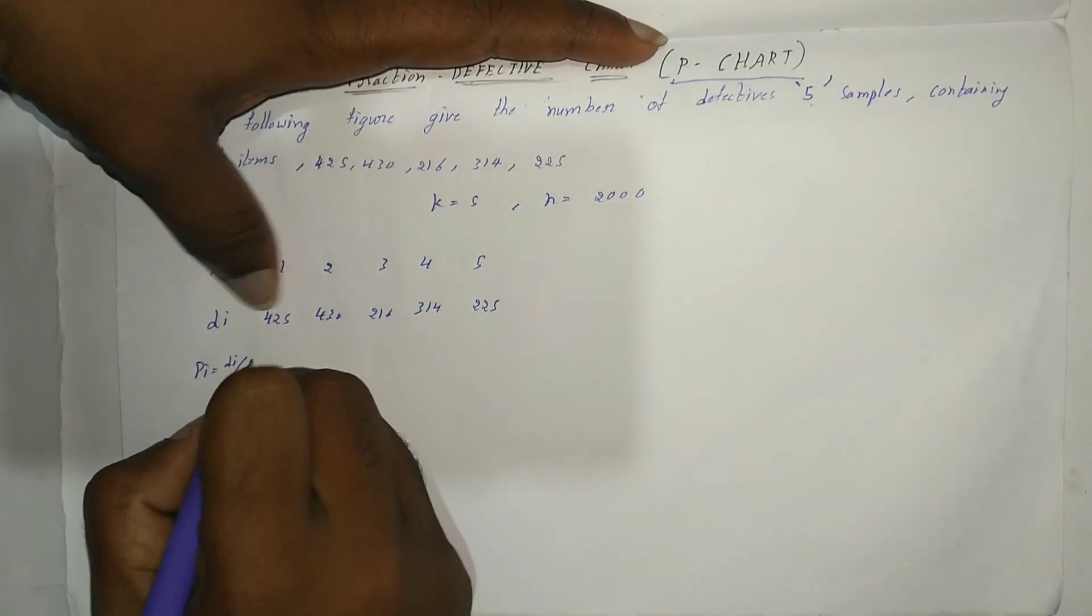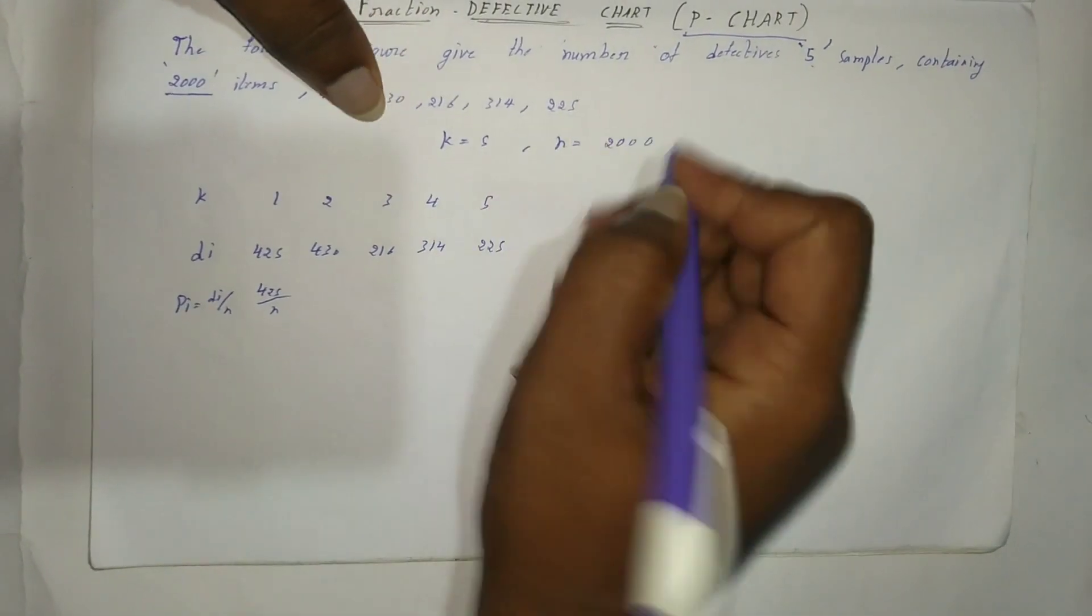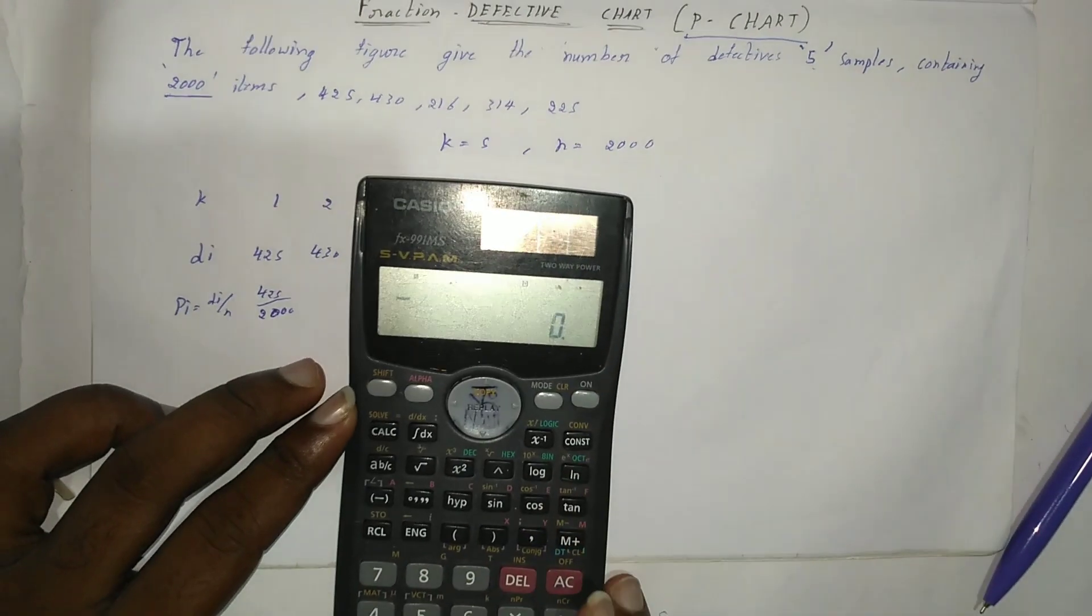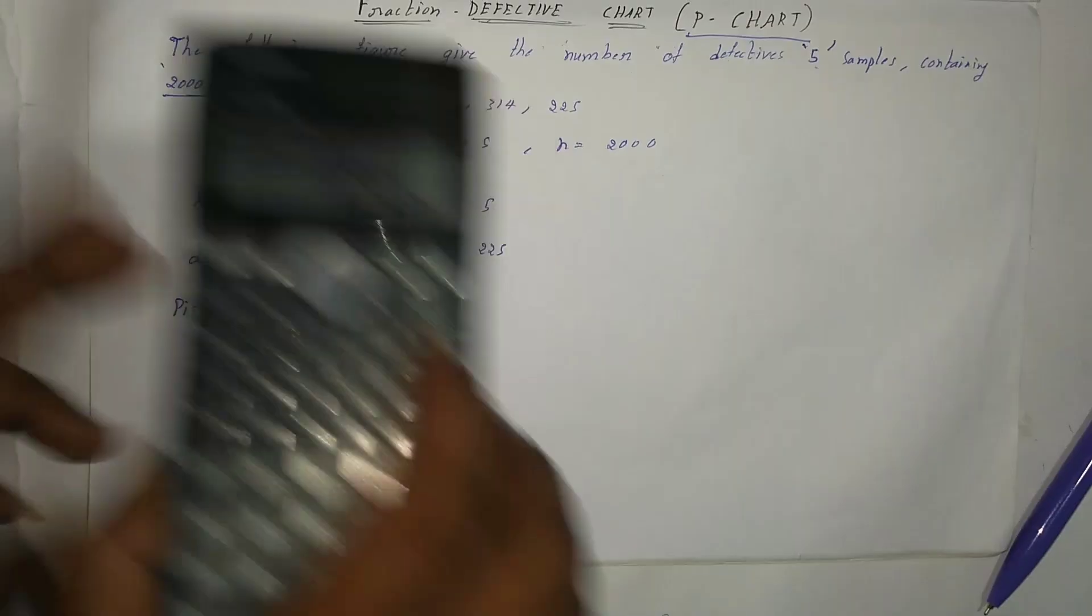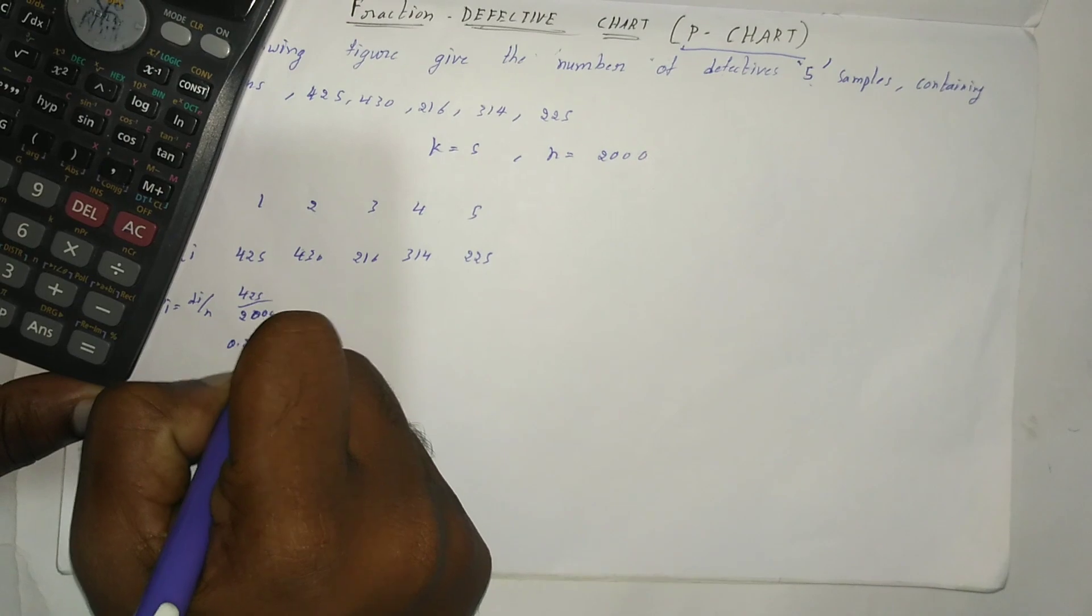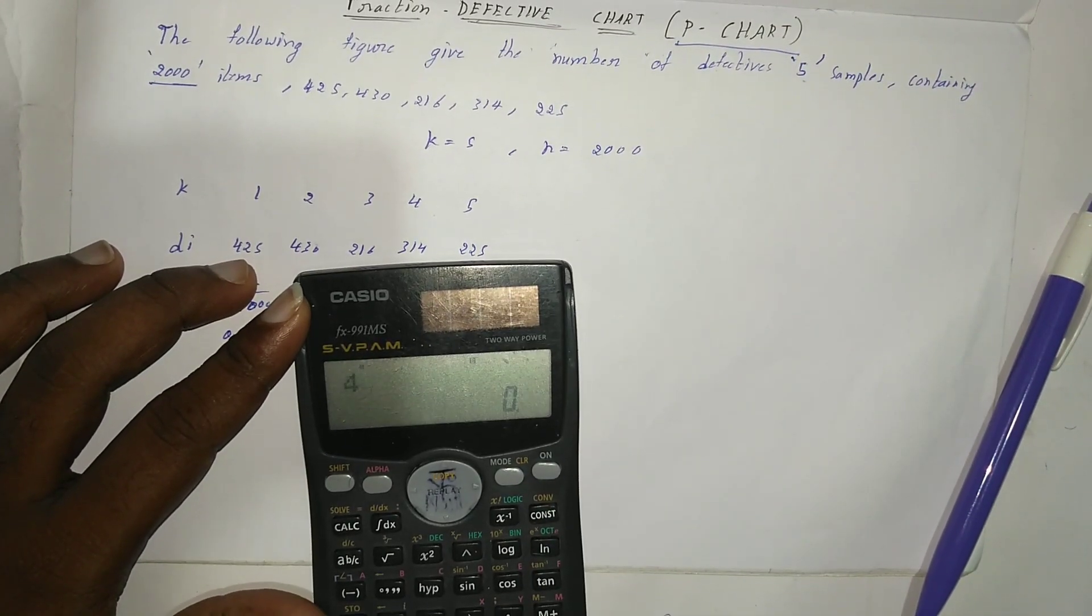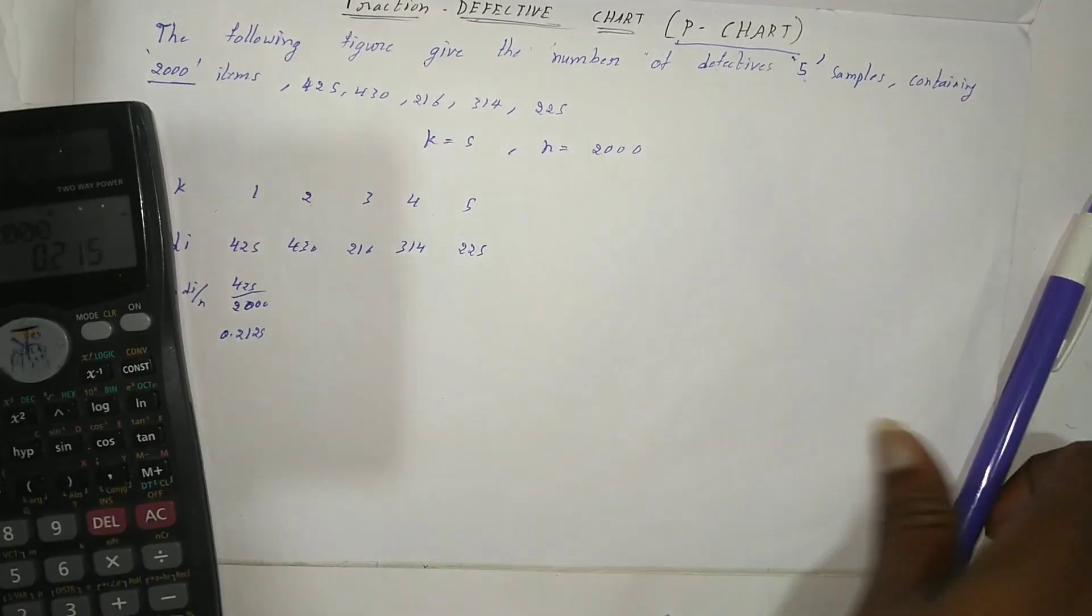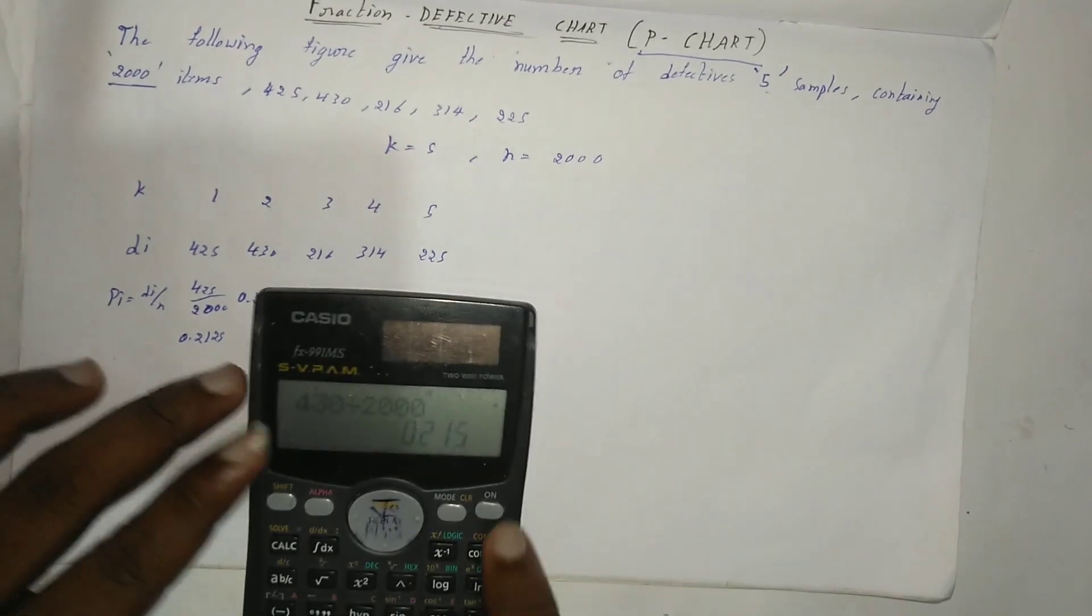Now pi equals di by n. So 425 by n, the n value equals 2000. So 425 by 2000 equals 0.2125. And this one is 430 by n, which is 430 by 2000, equals 0.215.